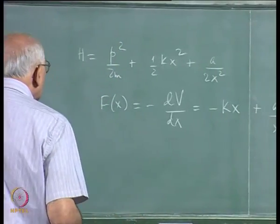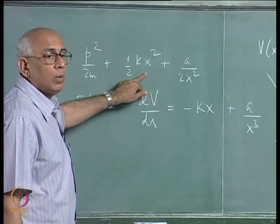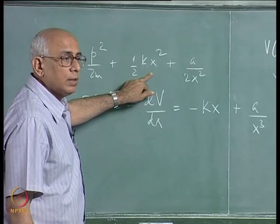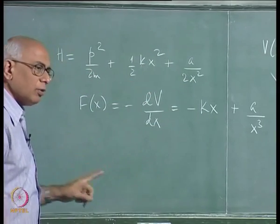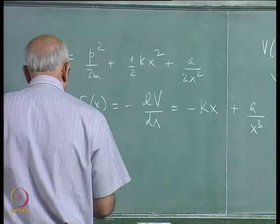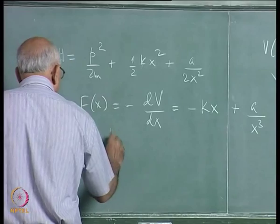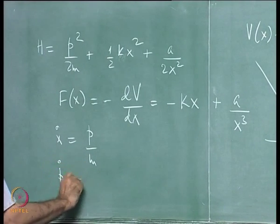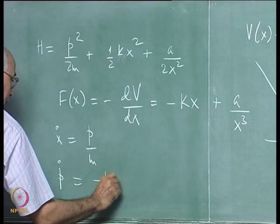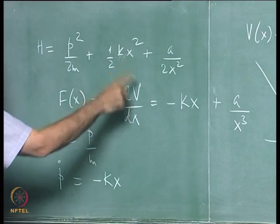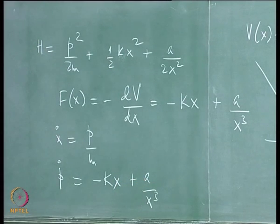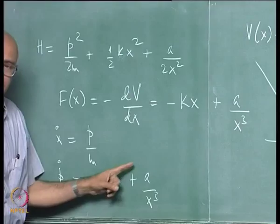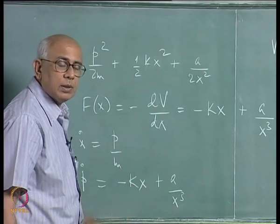When we say harmonic, we mean the potential is a quadratic function of displacement. Anything beyond that is non-linear, and the equation of motion becomes non-linear. Here, ẋ = p/m and ṗ = −kx + a/x³, which introduces non-linear terms in the coordinates. That is why these are called non-linear oscillators.